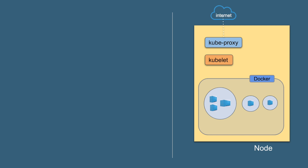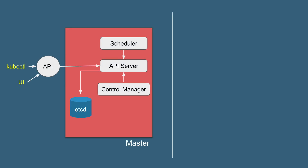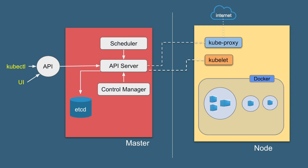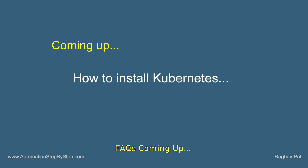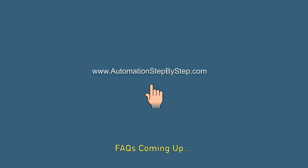Now we have a complete picture of the master and worker node and how they interact. The API server component of the master node interacts with the kubeproxy and kubelet components of the worker node — this is how the flow of information takes place. In the master node we have API server, scheduler, controller manager, and etcd. In the worker node we have kubelet, kubeproxy, and container runtime like Docker. All this is part of a Kubernetes cluster, which can have multiple nodes and one or more masters. I hope you now have a very good understanding of Kubernetes architecture. In the coming session, we will start installing and using Kubernetes.